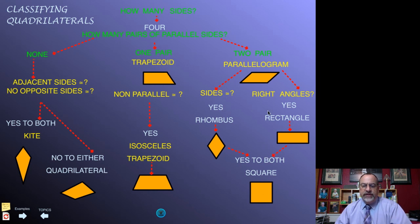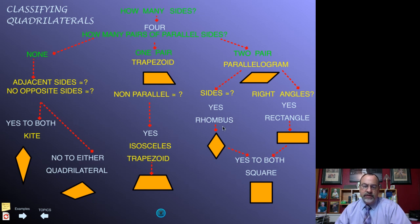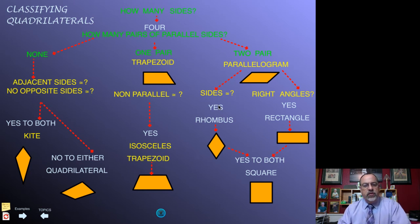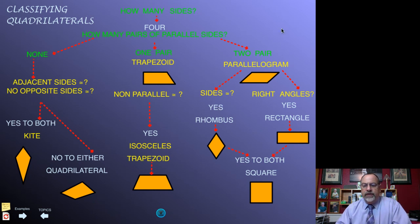If congruent sides but not right angles, it's a rhombus. If right angles but not congruent sides, then it is a rectangle. That's how the flowchart works and how you want to classify these quadrilaterals. In the next lesson, we'll talk about how we can classify these using coordinate geometry. Thank you.